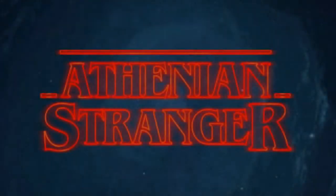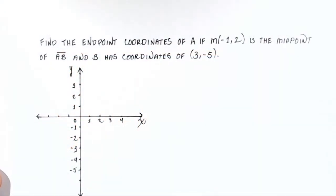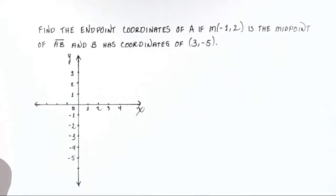All right, ladies and gentlemen, welcome back to another Athenian Stranger tutorial video, where today we will be looking at a problem where we have to find a missing endpoint. We've been looking at finding a missing midpoint, but now we're going to look at a problem where the midpoint is given and one of the endpoints is given, but we have to find the other one.